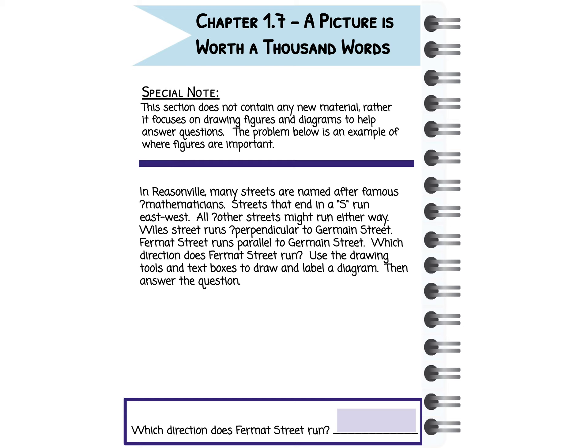So a couple of important pieces of information. Streets that end in an S run east-west; the others could go any other way. The first specific clue is that Weill Street runs perpendicular to Germain — perpendicular means they intersect at a right angle. Because of that rule, Weill Street, ending in S, must run east-west. So the perpendicular road, Germain, has to run north-south.